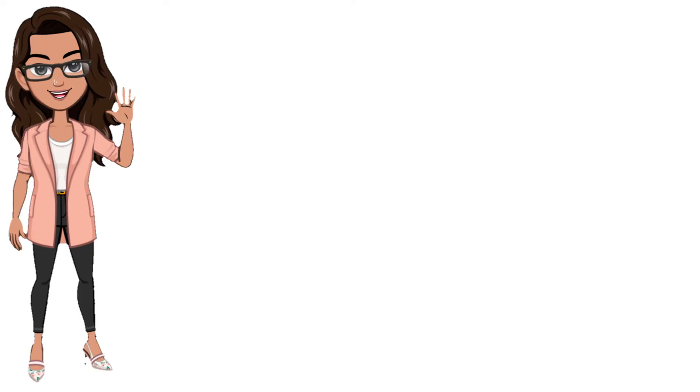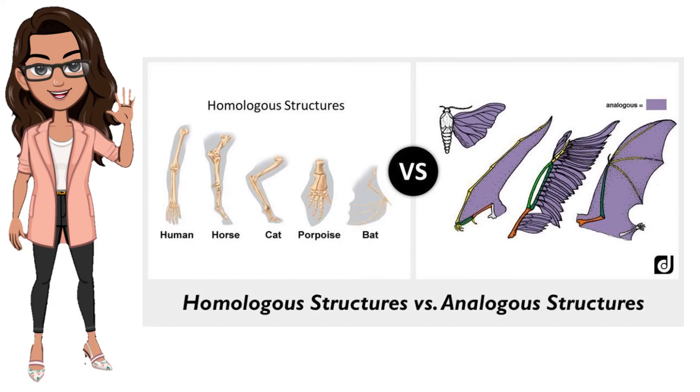One evidence for evolution is the presence of structures in organisms that share the same basic form. For example, the bones in the appendages of a human, horse, cat, porpoise, and bat all share the same overall construction as shown in the figure, resulting from their origin in the appendages of a common ancestor. Nevertheless, they have somewhat different forms and functions. They are called homologous structure.